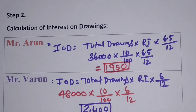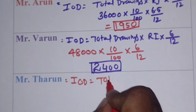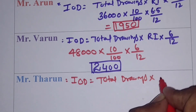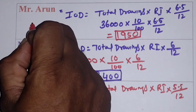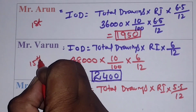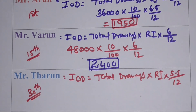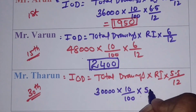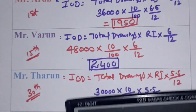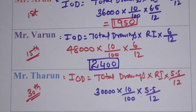For Mr. Tarun, who draws on the 30th of every month: Interest on drawings = Total Drawings × Rate of Interest × 5.5/12 = 30,000 × 10/100 × 5.5/12 = Rs. 1,375. The time factor reduces progressively because of the later drawing dates each month.